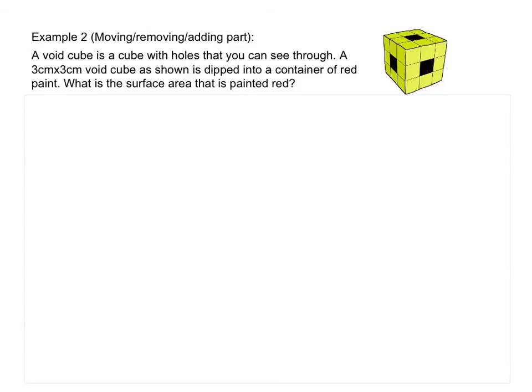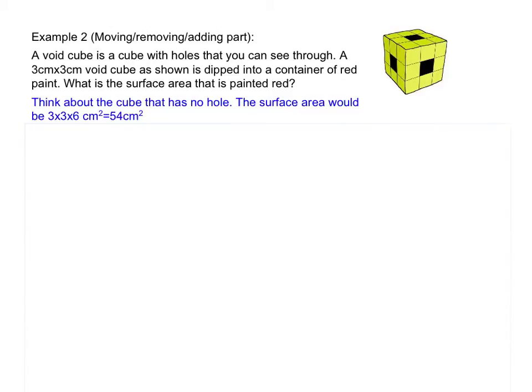Now how can I simplify this problem? Well, this is how I can simplify it. Think about the cube that has no hole. If the cube has no hole, that means imagine that there's no hole here, no hole here, here, and then the bottom, the right, and the back. Imagine that it's all covered up. Then it's easier to find out the surface area of this cube. So in this case, it will be each face is three by three and I have six faces in a cube. So it would be three by three and then times six square centimeter. So it's 54 square centimeter.